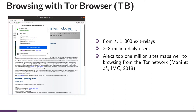We know that Tor Browser has around 2 to 8 million daily users, depending on which measurements. Thanks to a study by Mani et al. in 2018, we know that the websites visited by users of Tor Browser map very well to the so-called Alexa top one million most popular websites online. In other words, users of Tor Browser visit basically the same websites as, say, a Chrome or Safari user. This detail will matter a lot later.